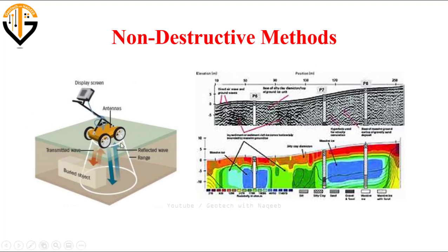In the left figure you can see the antenna and display screen where the images or profile of the soil is obtained. The waves are processed from the generator to produce the soil images. In the right figure you can see the soil stratigraphy or soil imaging — the profile obtained from the GPR — showing details of how the underneath soil is structured.